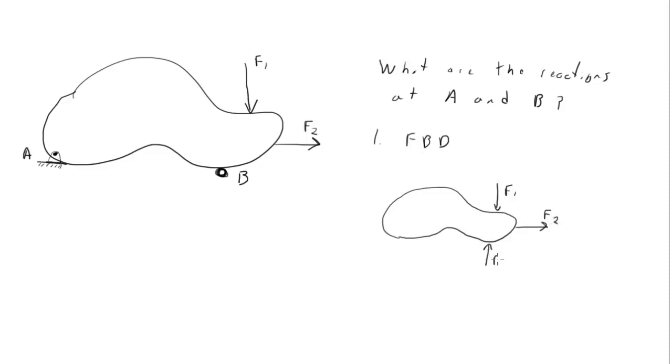And I go ahead and draw what the reactions are. So here's the reaction at B. And here we already said there's two reactions, right? The pin could push in either direction. So here's the reaction at A in the Y direction. Here's the reaction at A in the X direction. So here's our free body diagram.